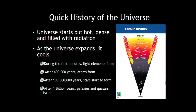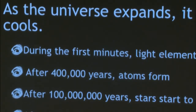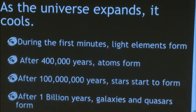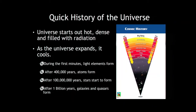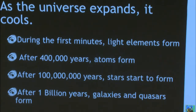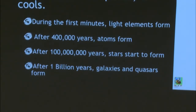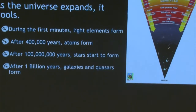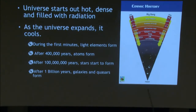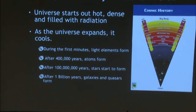Here's our quick history of the universe. The universe starts out very hot and dense. As it expands, it cools. In the first few minutes, you form almost all the helium and deuterium in the universe. About 400,000 years later, atoms form — that's about when we look back to when we look at the microwave background. About 100 million years later, stars start to form. Galaxies like our own are assembled by about a billion years after the Big Bang. The sun formed about four and a half billion years ago — about a third of the age of the universe, so relatively recent.